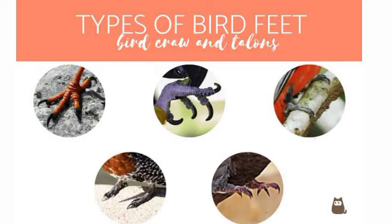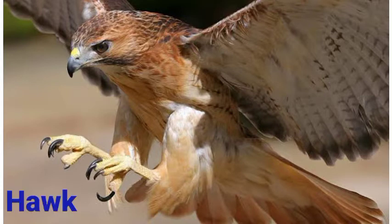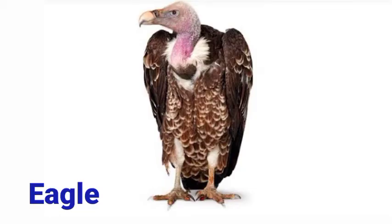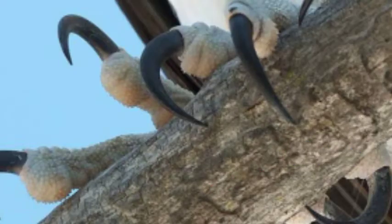Birds have two to four toes on each foot. There are different types of claws. Flesh-eating birds like hawks and eagles have different toe structures from other birds — these are called talons. The claws are extremely strong and sharp.